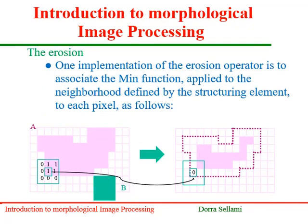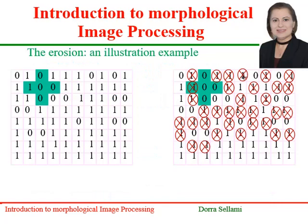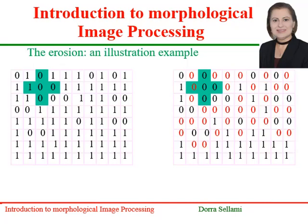One implementation of the erosion operator is to associate the min function applied to the neighborhood of each pixel defined by the structuring element. For each pixel, its neighborhood defined by the structuring element shape will be considered as input for the min function. The center pixel takes the min value in its neighborhood, and so on until the final set will be eroded at its border pixels. Here is an illustration example of computing the erosion of an input binary image. All pixels having smaller values in their neighborhood will be modified to binary zero. The modified values are represented in red in the eroded image.